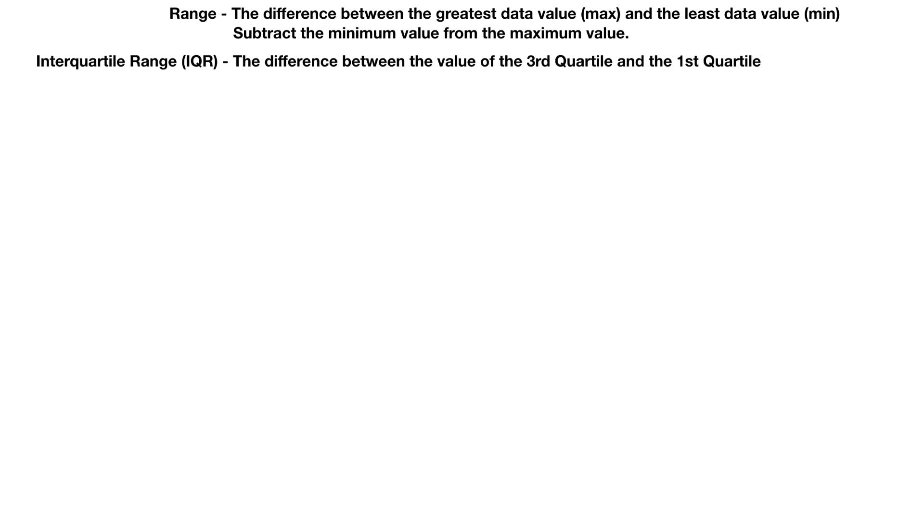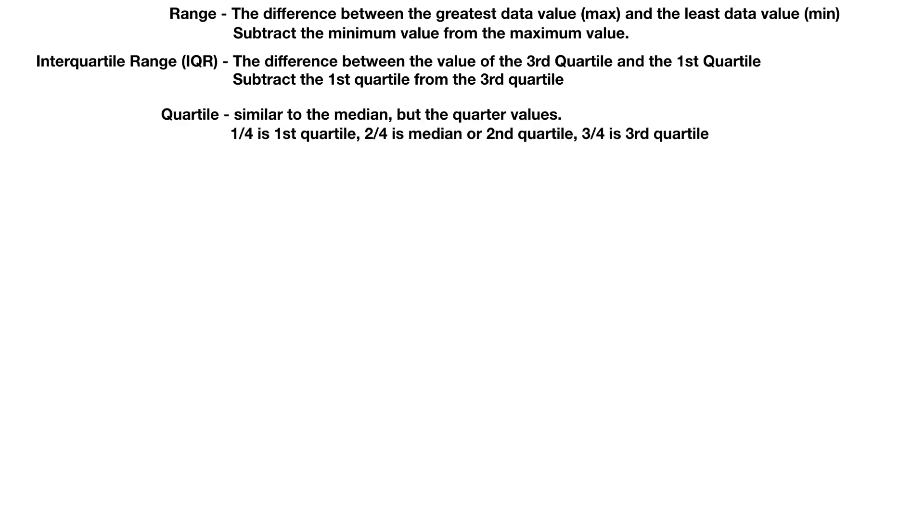The interquartile range, which might be a newer thing, is the difference between the value of the third quartile and the first quartile. Similar to the normal range, you just subtract to figure that out. Subtract the first quartile from the third quartile. If you don't remember what quartiles are, they are similar to the median. That's like the middle value, but it's kind of like the quarter value. So the first quarter in is first quartile, two-fourths in would be the median or second quartile, and the three-fourths in would be the third quartile. So let's look at how we can calculate that range and interquartile range and then really why that interquartile range might be important. And we can also call that the IQR.